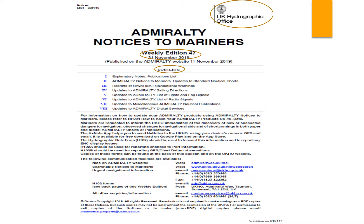Section 5 provides changes issued for the Admiralty List of Lights and Fog Signals. There are a number of publications under this category depending on geographic location. If there are any changes issued, they will appear under Section 5 — though it's not necessary that all of them have changes in every issue.